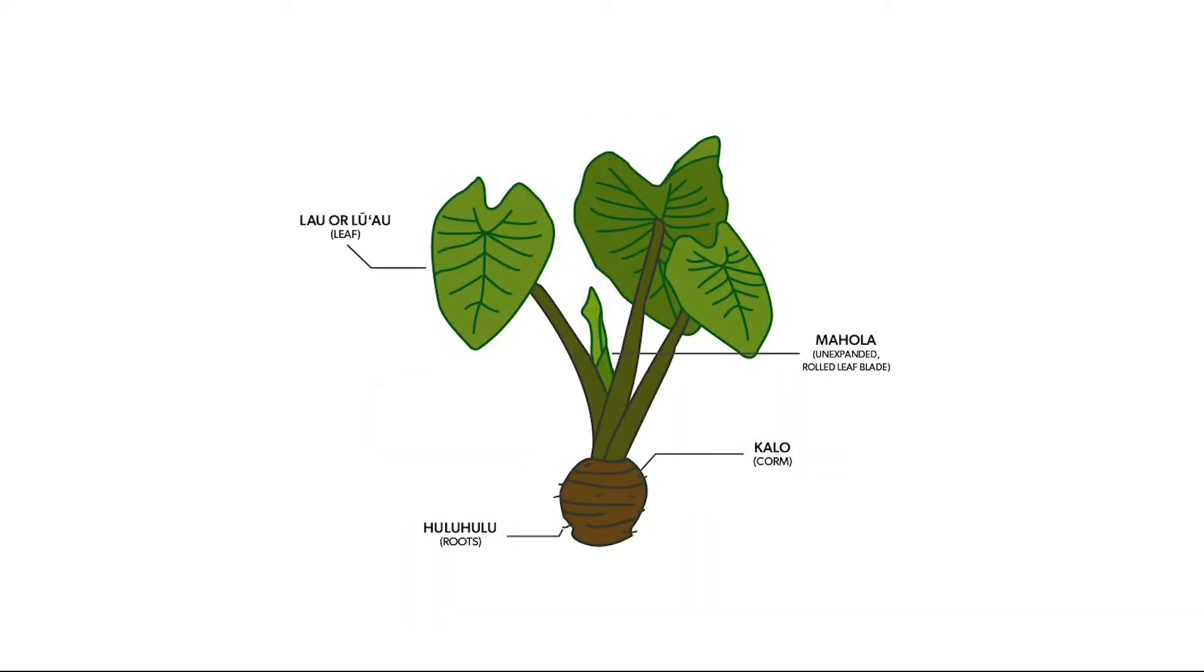For example, a colo plant is a system that has many parts. This system model of the colo helps us understand how it functions and predict its behavior.